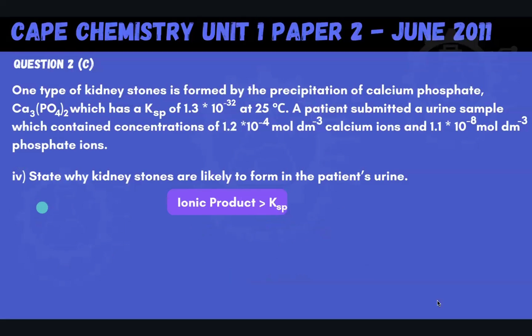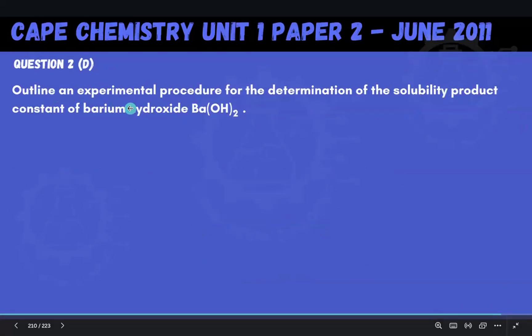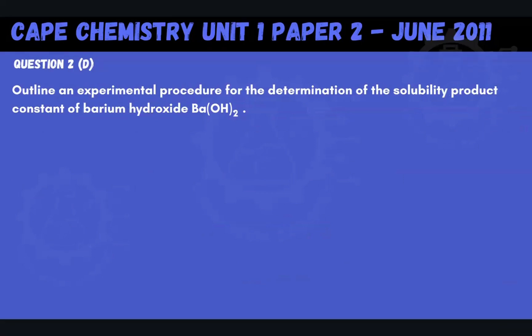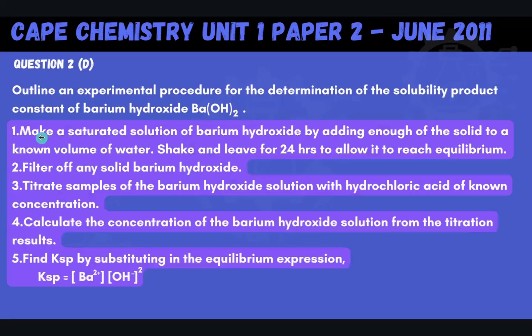Part D says outline an experimental procedure for the determination of the solubility product constant of barium hydroxide, Ba(OH)2. And again, I'm going to link the video where we did this for another hydroxide as well, another Group 2 hydroxide. So I'll just link that here while we outline our experimental procedure here. Now, there are five key steps to determine any solubility product constant. There are five key steps. So here they are. We're going to make a saturated solution of barium hydroxide by adding enough of the solid to a known volume of water. Then we're going to shake that mixture and leave it for 24 hours to allow it to reach equilibrium.